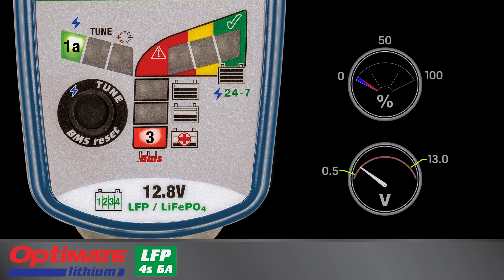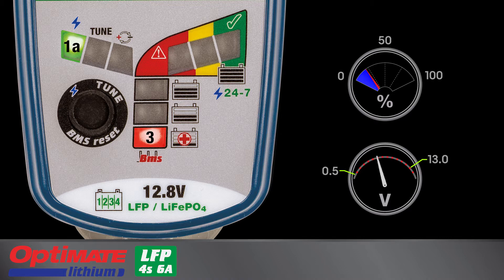Lamp 1A lights when Optimate Lithium is connected to AC power indicating charge mode is active.